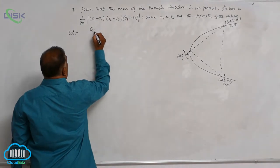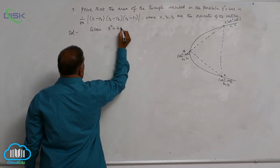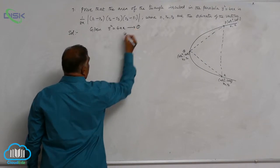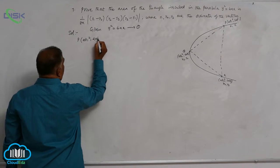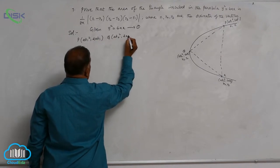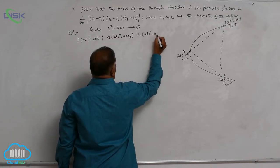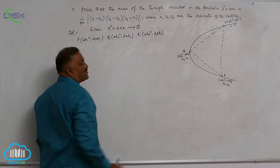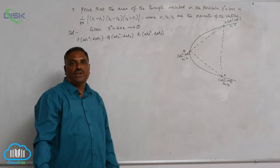So first, given parabola is y² = 4ax, make it equation 1. P at₁² comma 2at₁, Q at₂² comma 2at₂, R at₃² comma 2at₃ are points on the parabola. Now we need to find out area.